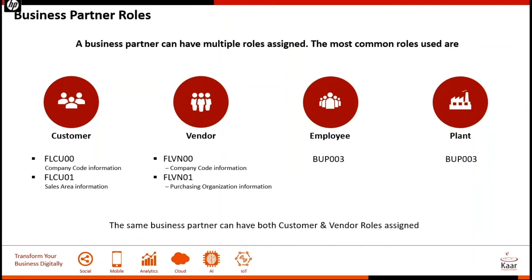Talking about business partner roles, we have a specific way to identify the business so we can determine the subset of all the data available to the information. I just highlighted very few business roles here — we have more on that. Basically, if you want to extend the customer, we have two roles: one for company code specific and one for sales area specific.